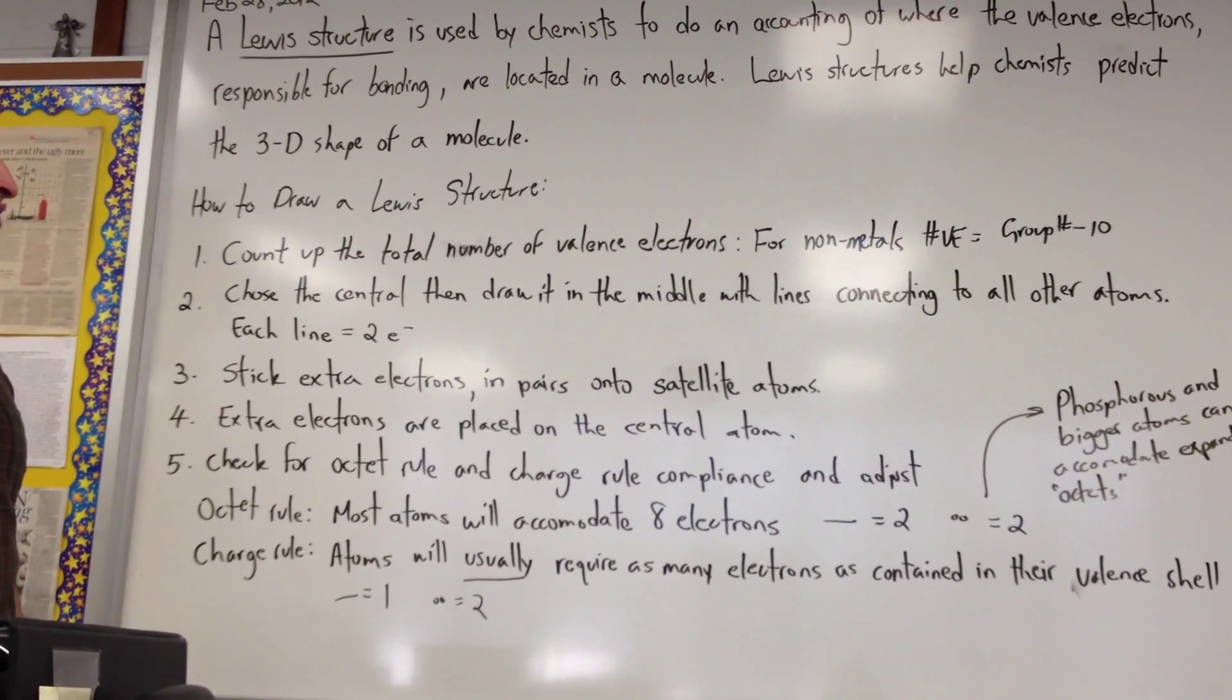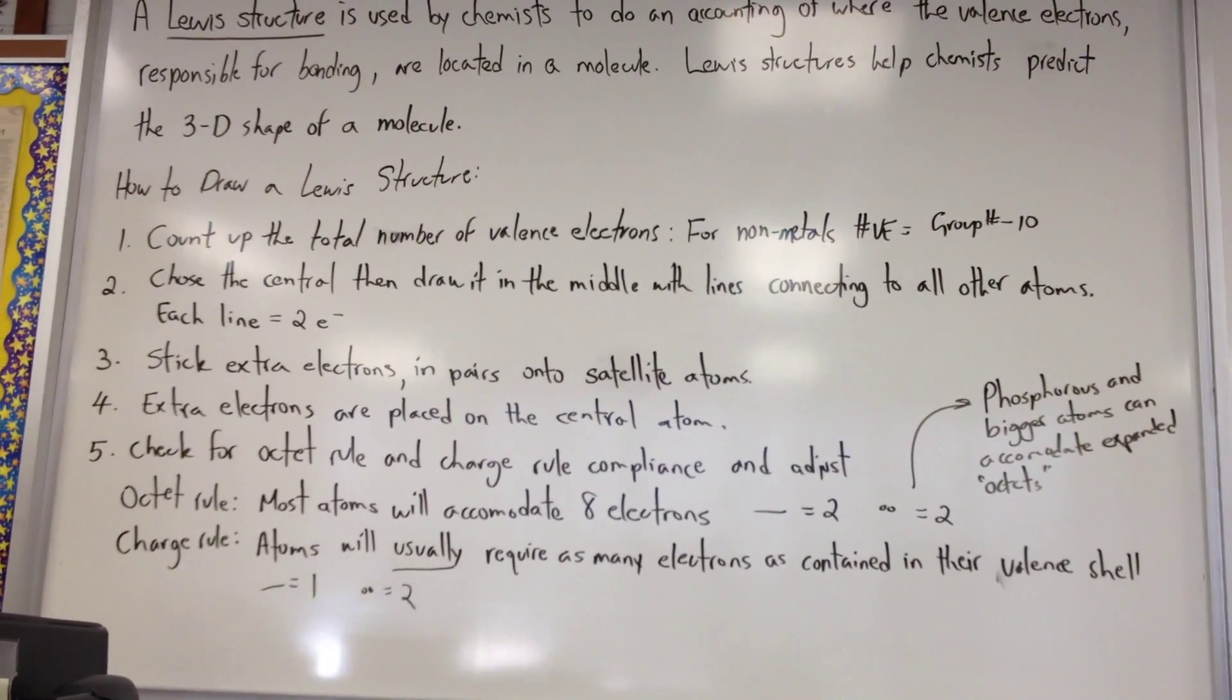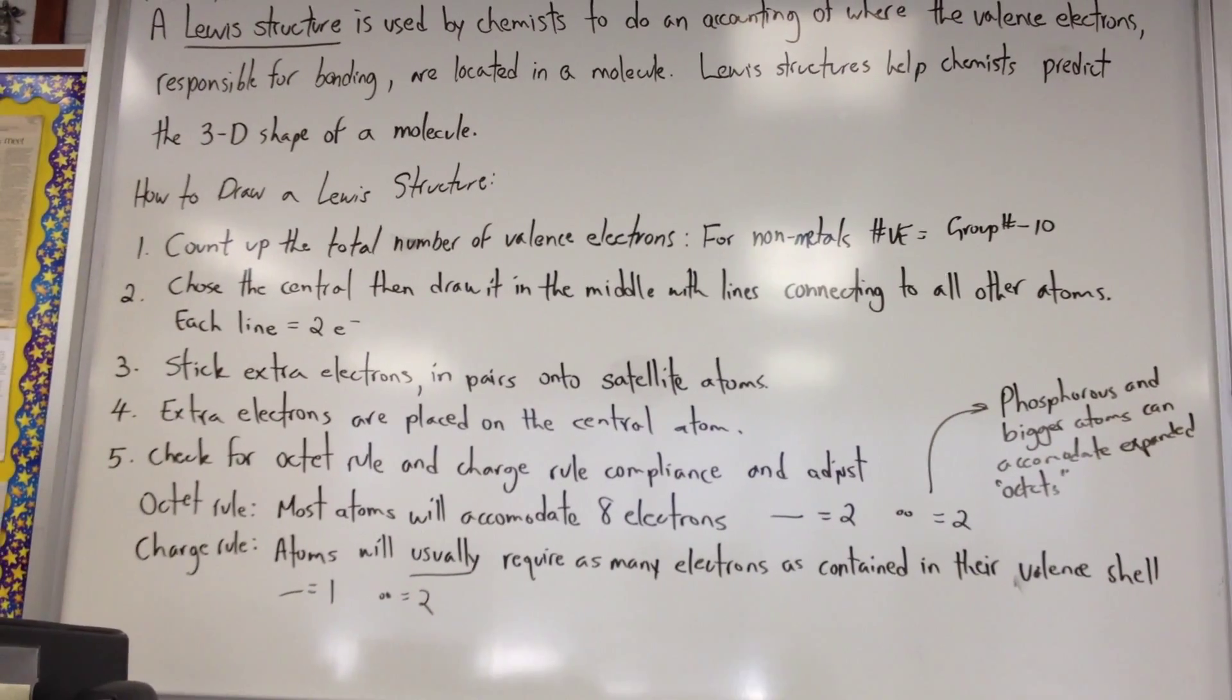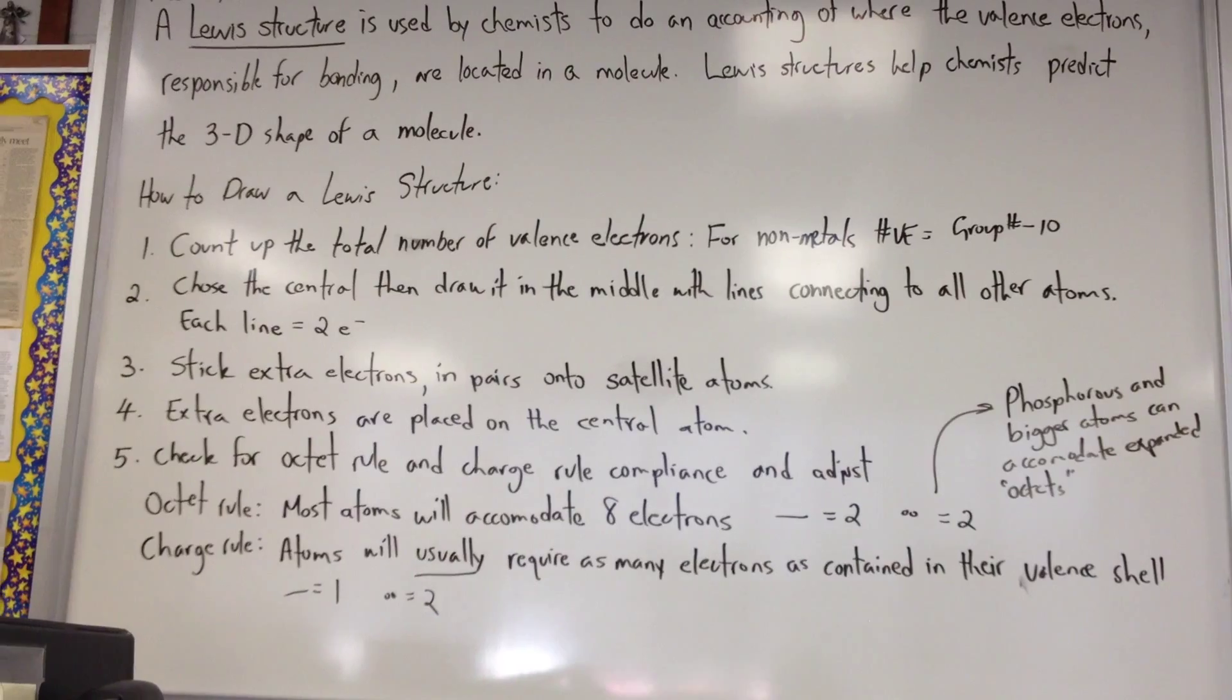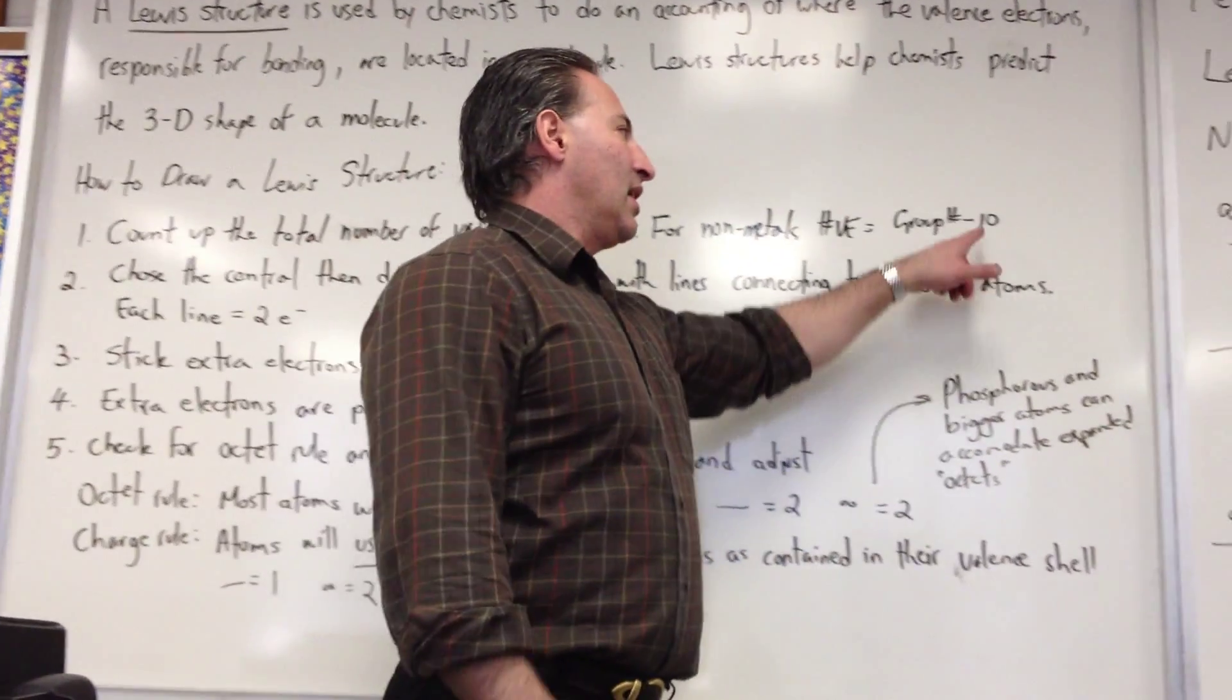So how do we draw Lewis structure? First of all, we count up the total number of valence electrons in the elements involved. For non-metals, the number of valence electrons is its group number minus 10.